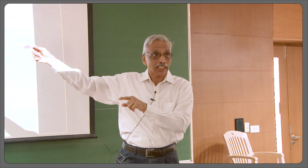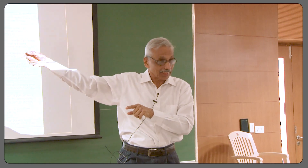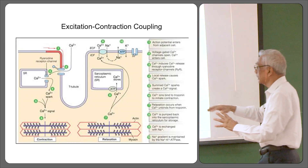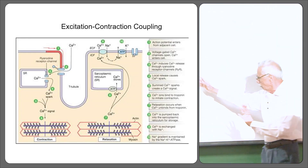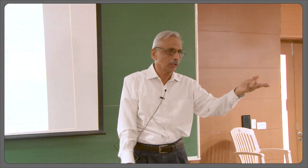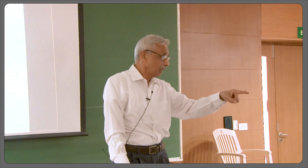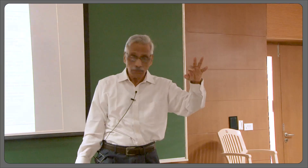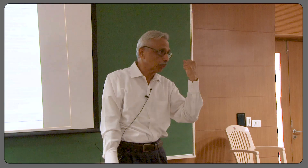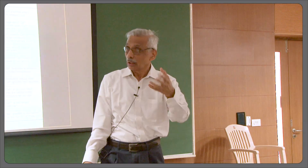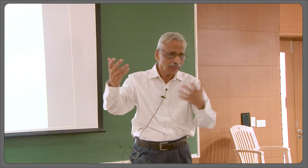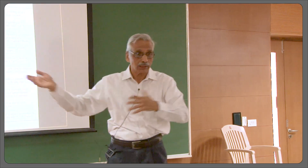So first, calcium is coming from outside; second, calcium is coming from the sarcoplasmic reticulum. This huge amount of calcium is now available to troponin. Troponin has three subunits, one of which has a binding site for calcium. Calcium binds to it, pulls the tropomyosin away, exposes the site on the actin, actin-myosin interaction happens, sliding happens, and the muscle contracts.